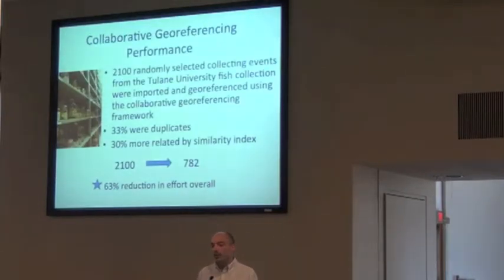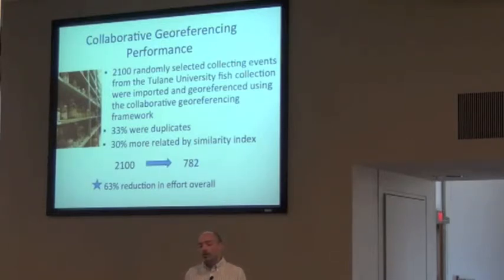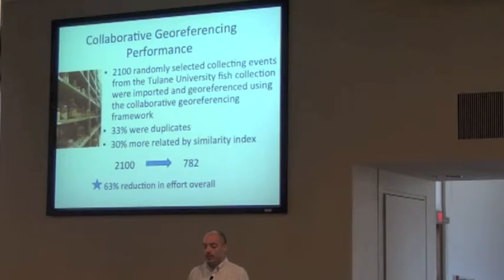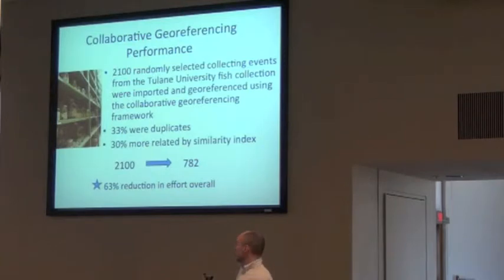To evaluate how well that actually works, we took data from the Tulane Fish Collection and evaluated the algorithms used to identify similarities and identities among records, to see what we could reduce our workload to. For 2,100 randomly selected records from the Tulane Fish Collection, we were able to reduce the unique records that needed to be georeferenced down to about 782 records — reducing 63% of the workload. The Tulane Fish Collection does have a high degree of repetition among its collecting localities, so these numbers probably overestimate the gain you might get within your collection, but it wouldn't be that drastic a difference.